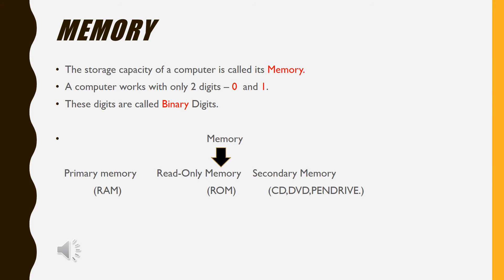RAM stands for Random Access Memory. This memory is directly accessed by the CPU. Next is ROM, that is Read Only Memory. This is the temporary memory of the computer.